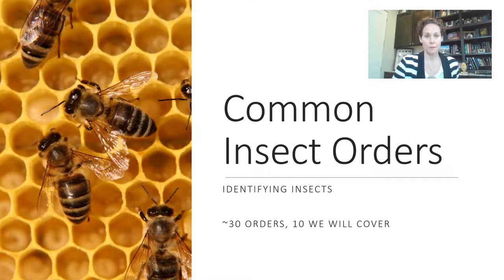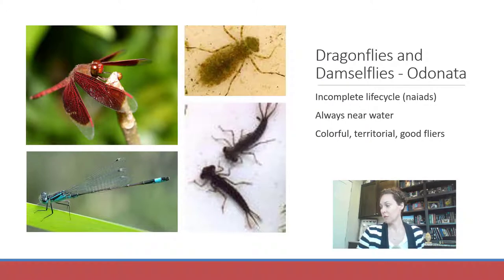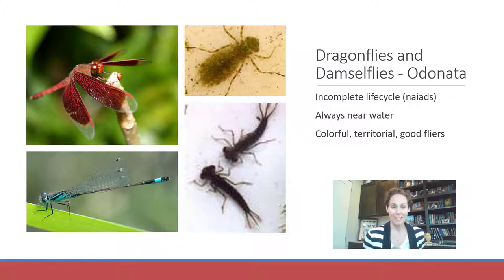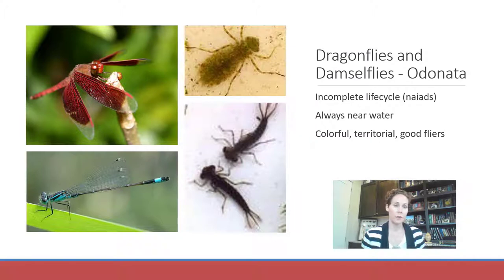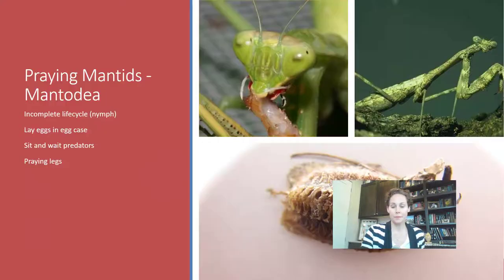Dragonflies and damselflies are in the order Odonata — an important order for you as a master naturalist because it is your mascot. They have an incomplete life cycle and lay their eggs in water, so their immatures are called naiads, always found near water, though some are migratory. They're usually very colorful and very territorial, so if you want to photograph one, it will generally return to the same spot. They are also considered very good flyers.